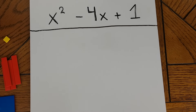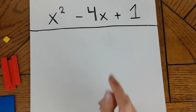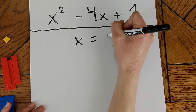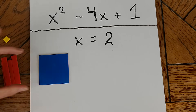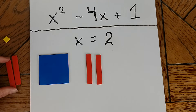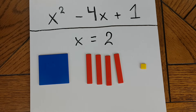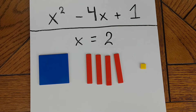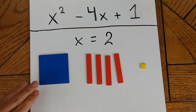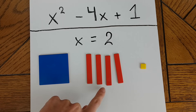One of the most fundamental practices we teach in algebra is how to evaluate an expression for a given value of x. Let's say I want to evaluate the expression x squared minus 4x plus 1 when x equals 2. I'm going to start out by modeling my expression with the algebra tiles: one x squared tile, four red or negative x tiles, and one positive unit tile. Now I've been told that x equals 2, and I can represent that with two yellow unit tiles. What I'm going to do to evaluate this expression is anytime I have an x, I'm going to replace that with those two yellow unit tiles.